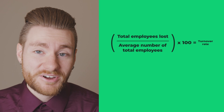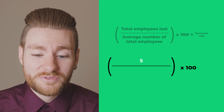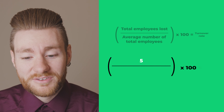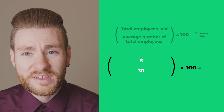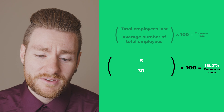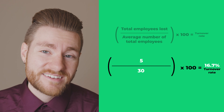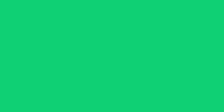In our example, if we divide those five employees by the 30 overall, we get 0.167, or a 16.7% turnover rate.